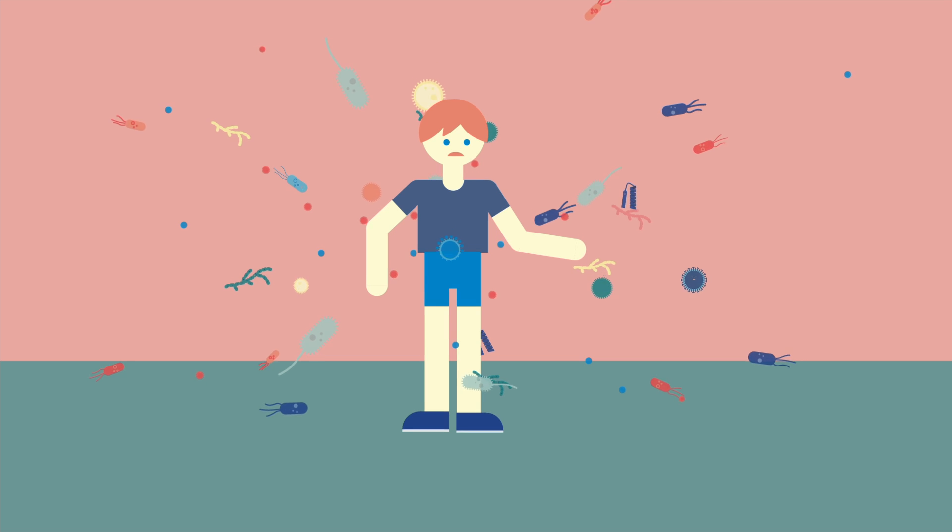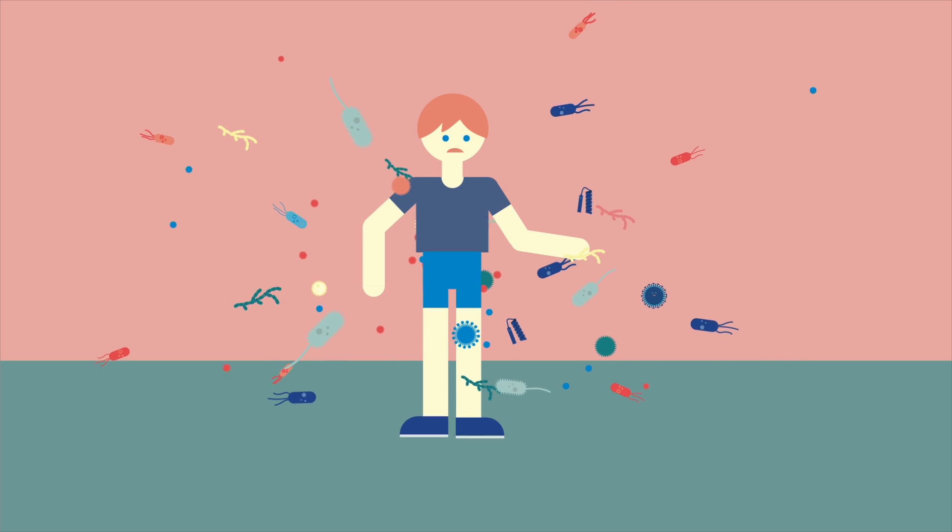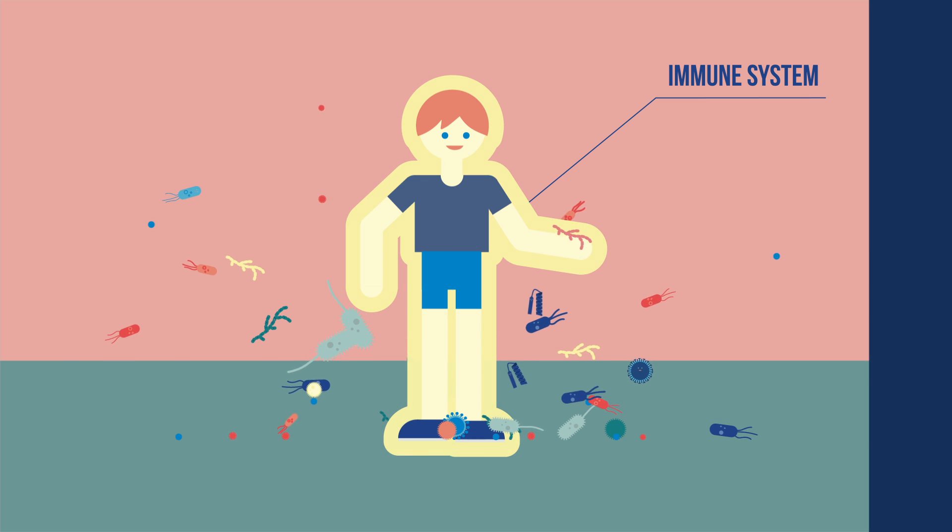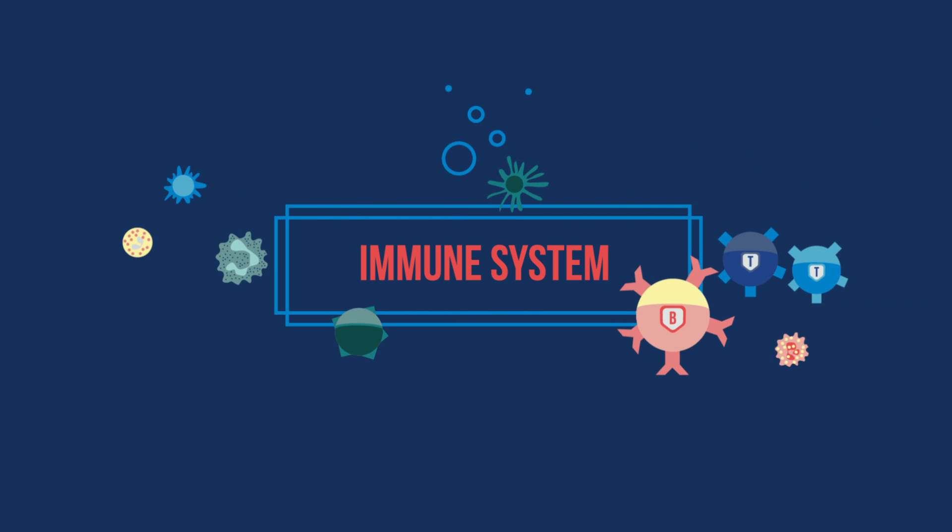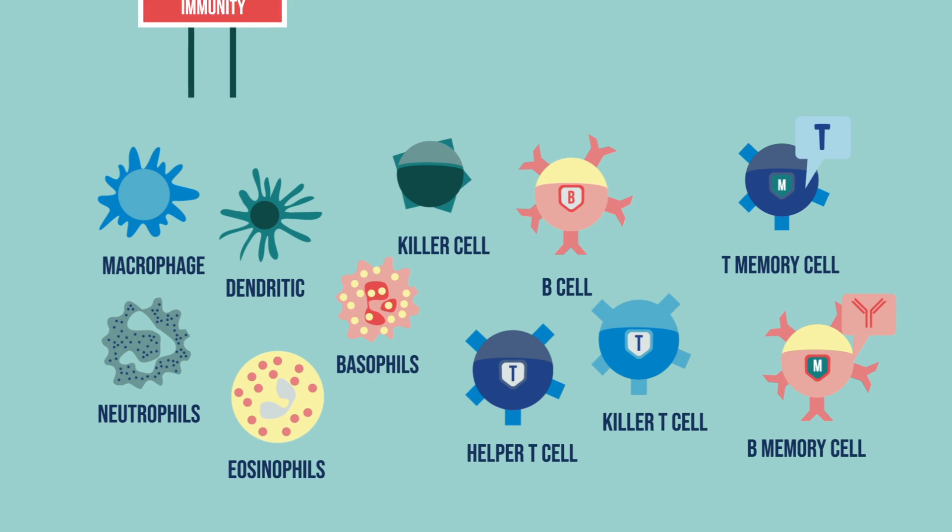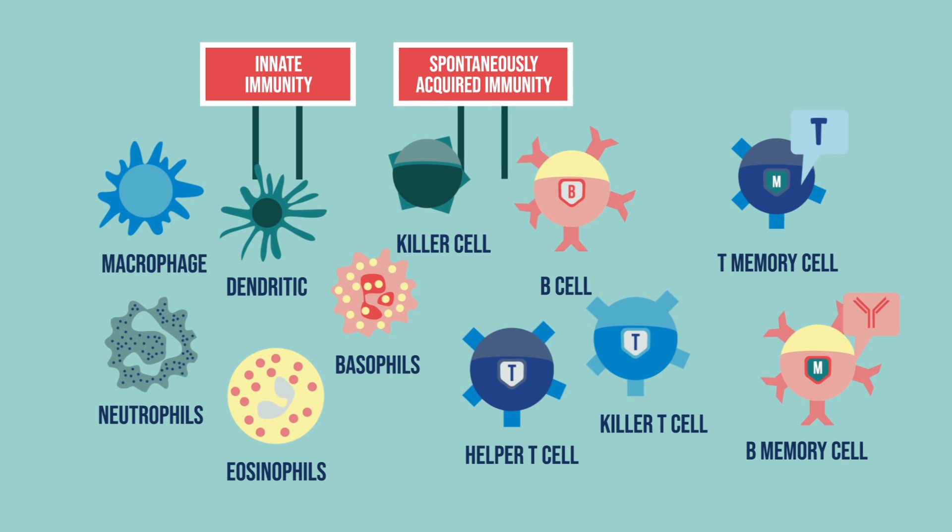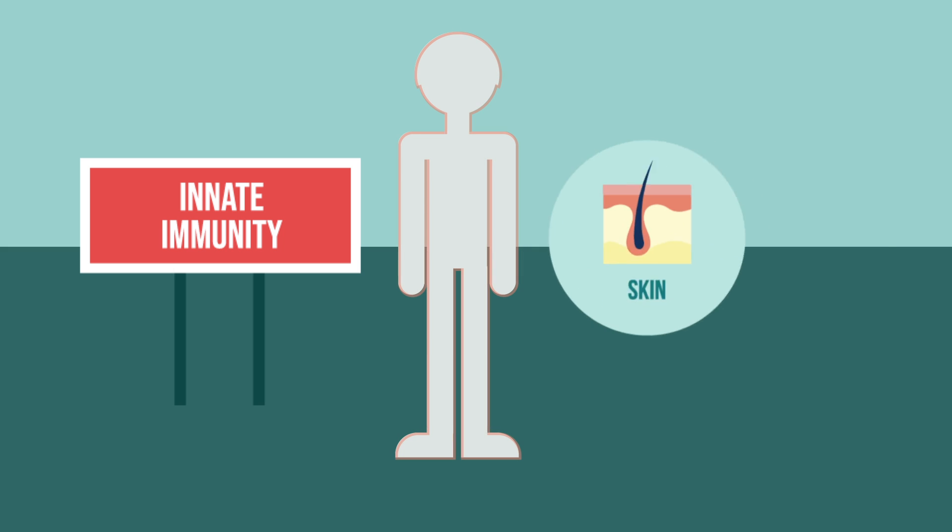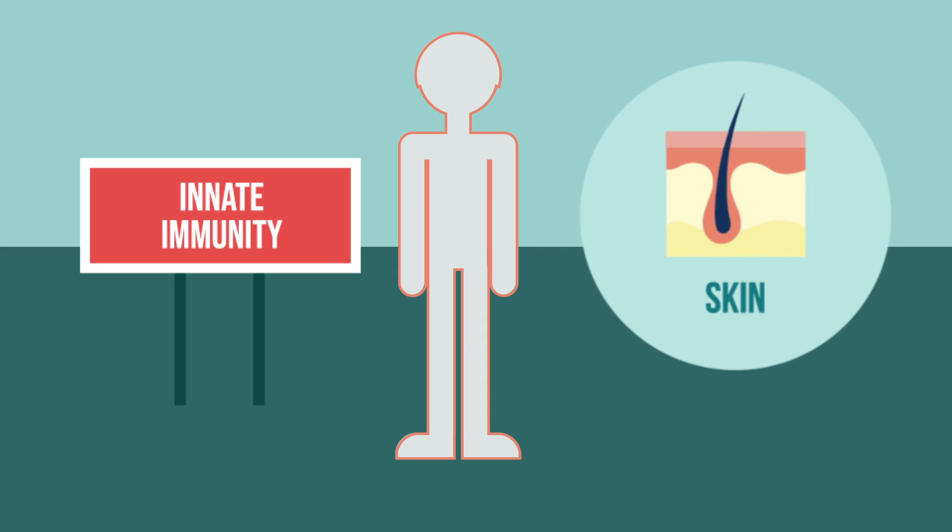Our bodies are constantly bombarded by pathogens, but thanks to our immune system we are only rarely aware of this. The immune system is comprised of a complex system of cells, tissues, organs, and circulating molecules. One of our first lines of defense is the skin and the oily waxy matter it secretes.